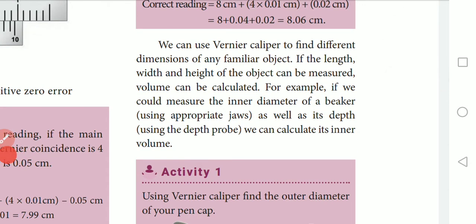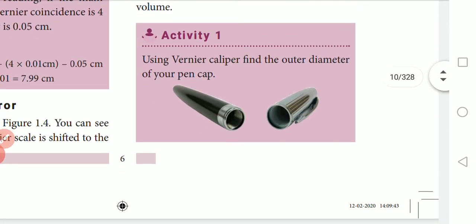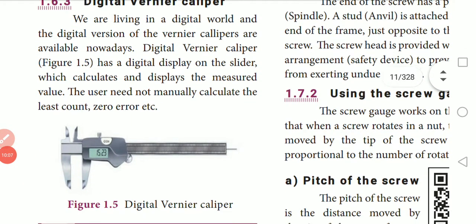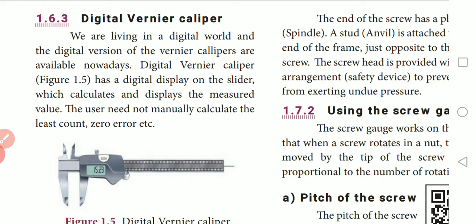We can use the vernier caliper to find different dimensions of any object. The length, width, and height of an object can be measured and the volume can be calculated. For example, we can measure the inner diameter of a beaker using the appropriate jaw, and the depth using the depth probe, then calculate the inner volume.